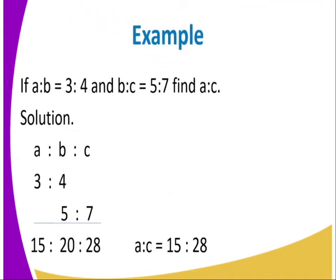For example, if A to B is 3 to 4 and B to C is 5 to 7, find the ratio of A to C. We are not given the ratio of A to C directly, so we have to calculate it. We arrange in ratio form: A to B to C. We need a common value for B, so we find the LCM of 4 and 5, which is 20.